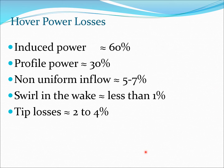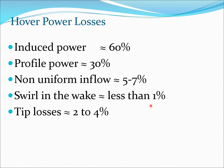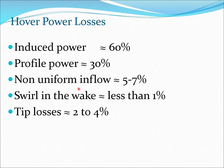Let's tabulate some of the actual power in a typical real rotor. The induced power would be somewhere around 60 percent. 30 percent would be consumed by profile power. Non-uniform inflow would be 5 to 7 percent. Swirl in the wake will be less than 1 percent, and tip losses 2 to 4 percent. Non-uniform inflow takes place because the induced velocity V is not the same across the entire rotor disc as assumed in momentum theory — there will be some variation in real life.